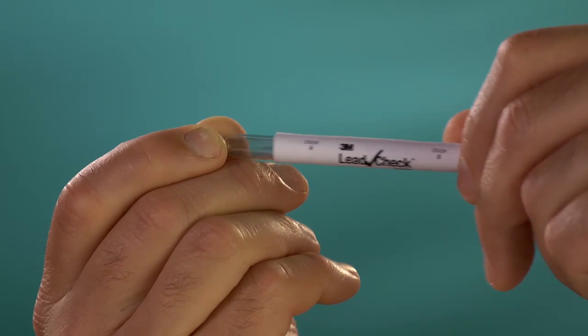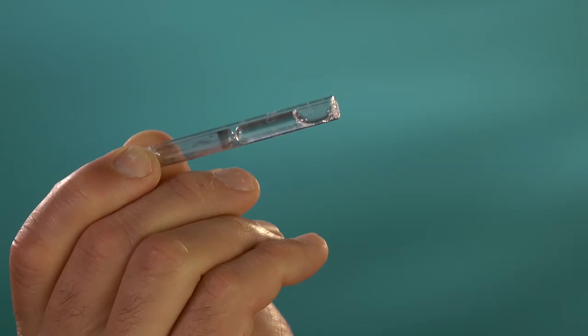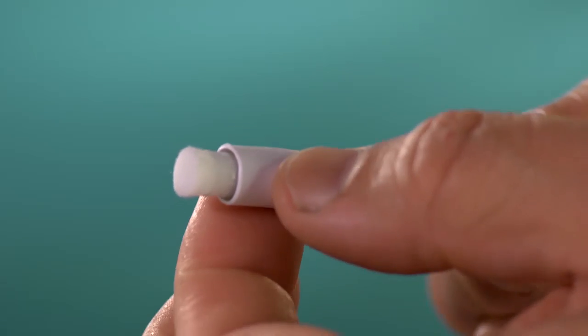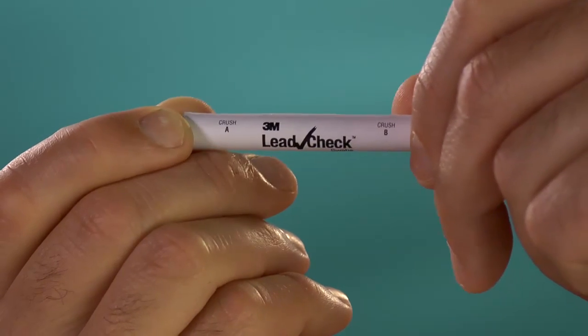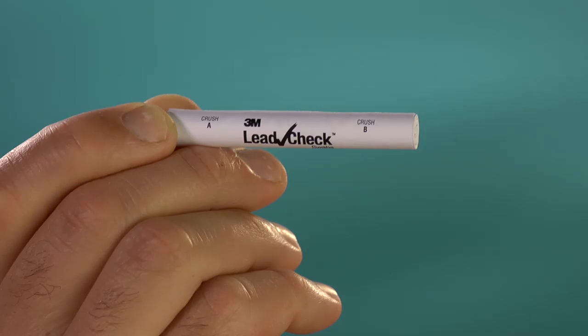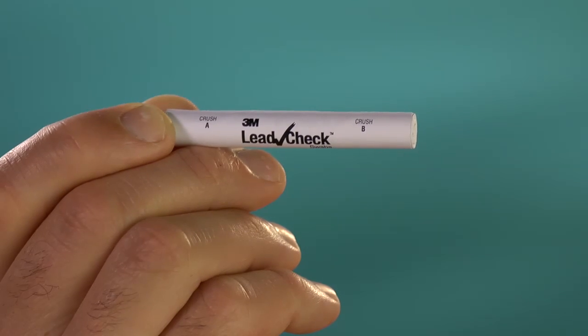Note that there are two separate glass ampules inside each 3M LeadCheck swab and that both must be crushed to activate the reagent liquid. Do not crush these ampules unless the cardboard cover is in place completely covering both of the glass ampules.